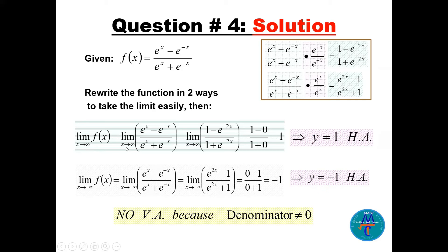For the limit as x goes to plus infinity, use the form (1 - e^(-2x)) / (1 + e^(-2x)). Replacing x with infinity, e^(-infinity) = 1/infinity = 0. So the limit becomes (1 - 0) / (1 + 0) = 1. Therefore y = 1 is a horizontal asymptote.